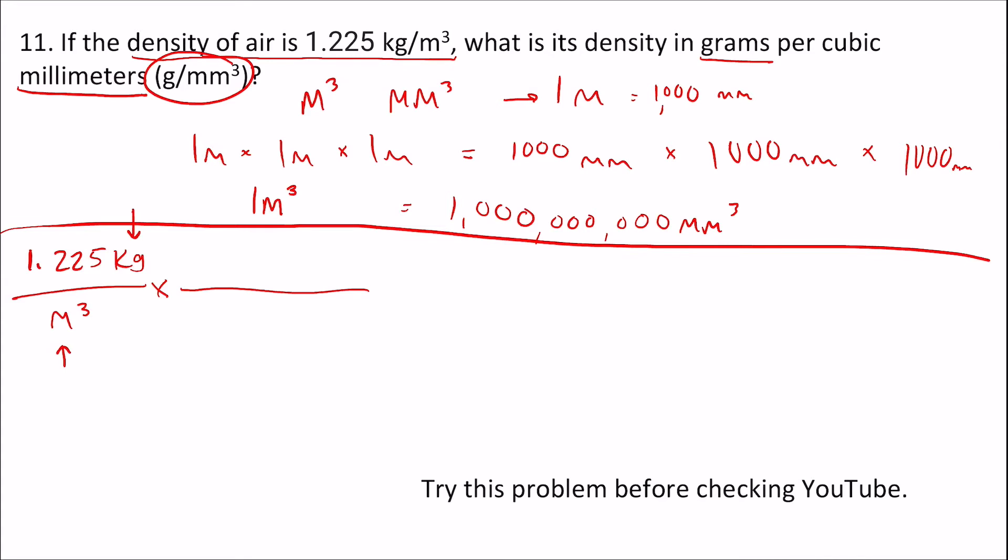Since we want to cancel out meters cubed, we're going to write that on the top, and then we're going to convert the meters cubed into millimeters cubed. We use the conversion factor we just came up with, one meters cubed on the top, and then one billion millimeters cubed on the bottom. Now the meters cubed will cancel out, and we're left with millimeters cubed on the bottom, and we still have kilograms on the top.